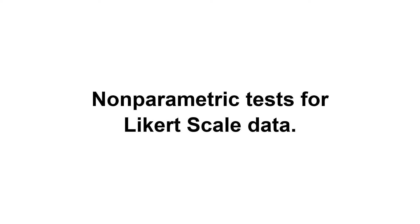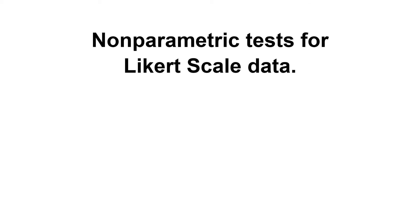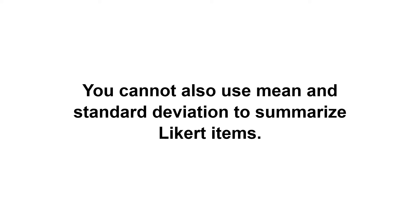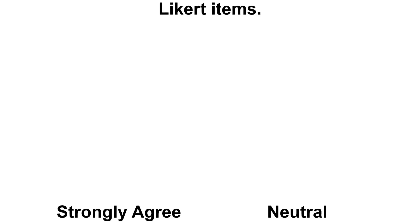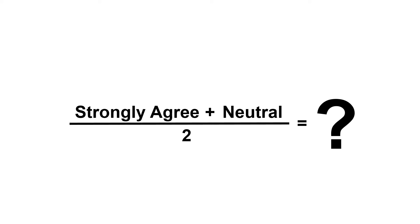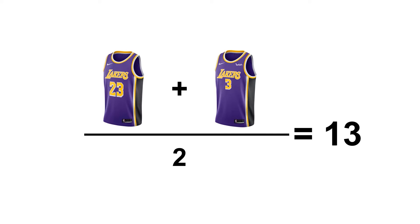Since we classify Likert items as ordinal, ordinalists conclude that one must use non-parametric tests for such variables. Remember that to use parametric tests, the variable's measurement scale should be at least interval, and Likert items violate this assumption. Ordinalists also say that you cannot use mean and standard deviation to summarize Likert items. For instance, if you have two Likert items with responses 'strongly agree' and 'neutral' — mathematically, what does it mean to add 'strongly agree' and 'neutral'? And worse, you divide it by two. It is like getting the average of numbers on a basketball player's jersey — sure, you get an answer, but what does it mean?